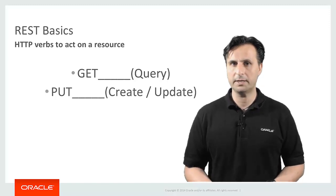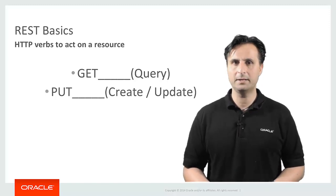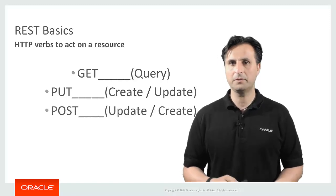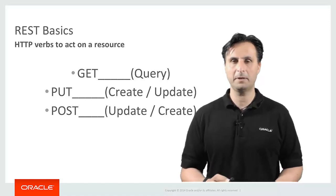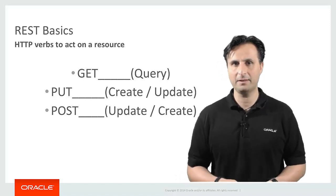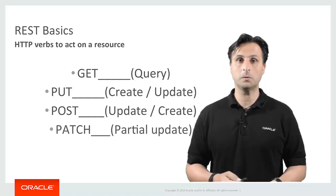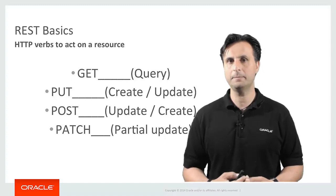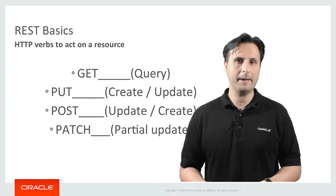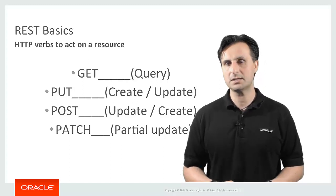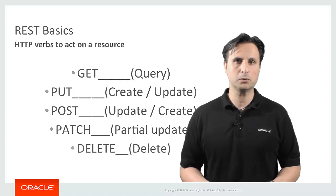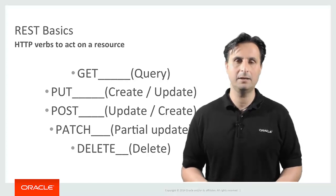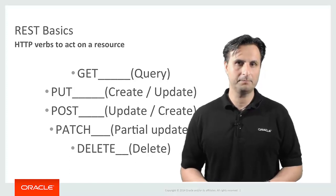PUT is typically used for creating a new object, though people also use it for updating since there is no strict rule. The common pattern is GET for read, PUT for create, and POST for update — but between PUT and POST there is no strict rule, so you might find anything. PATCH is another HTTP method that allows you to update only parts of an object, sending just the delta of changes rather than the whole resource. And then there is DELETE, which removes the resource from the server.